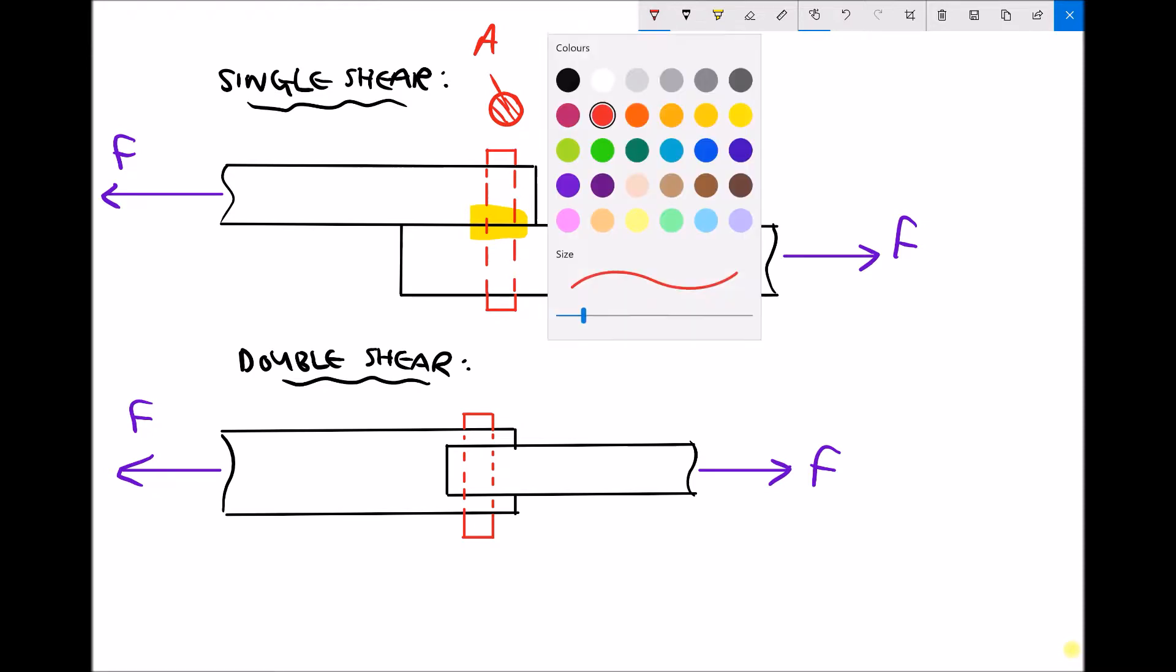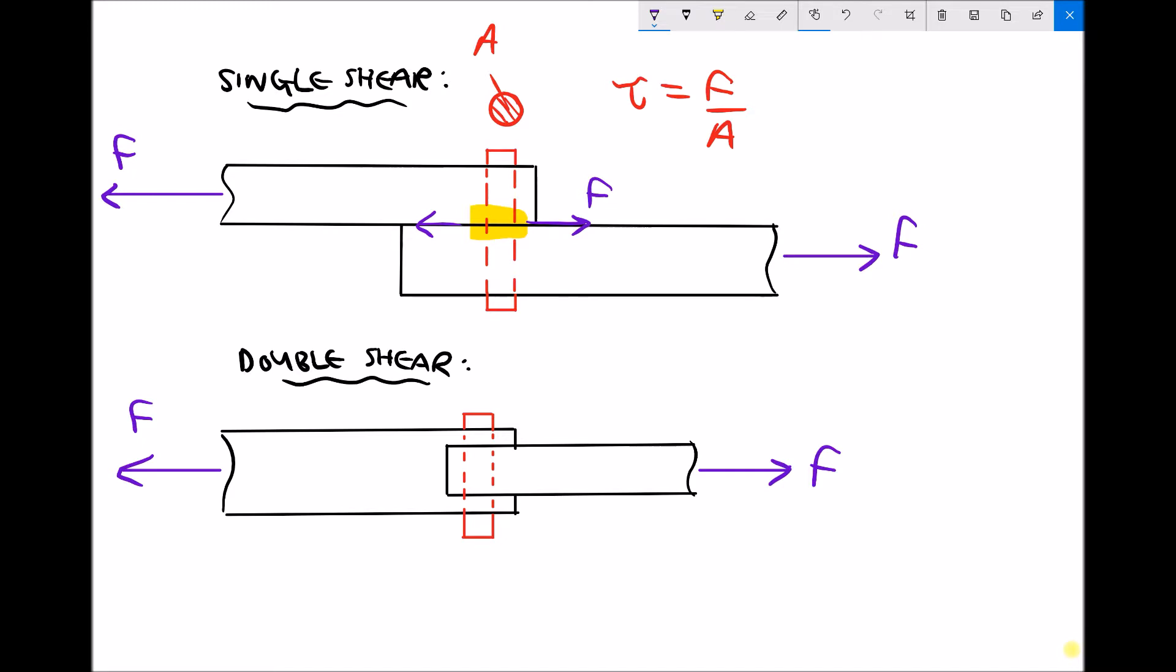But because at the point where that shearing action is taking place, the two forces are not offset at a given distance, or if they are, that distance is negligible, we are in a position where it would be very difficult for us to calculate the shear strain on that piece of material.